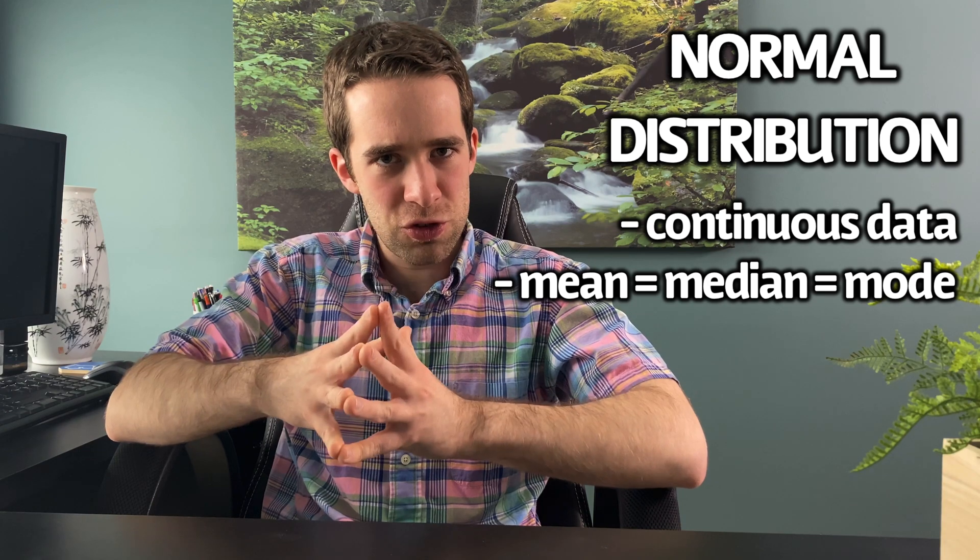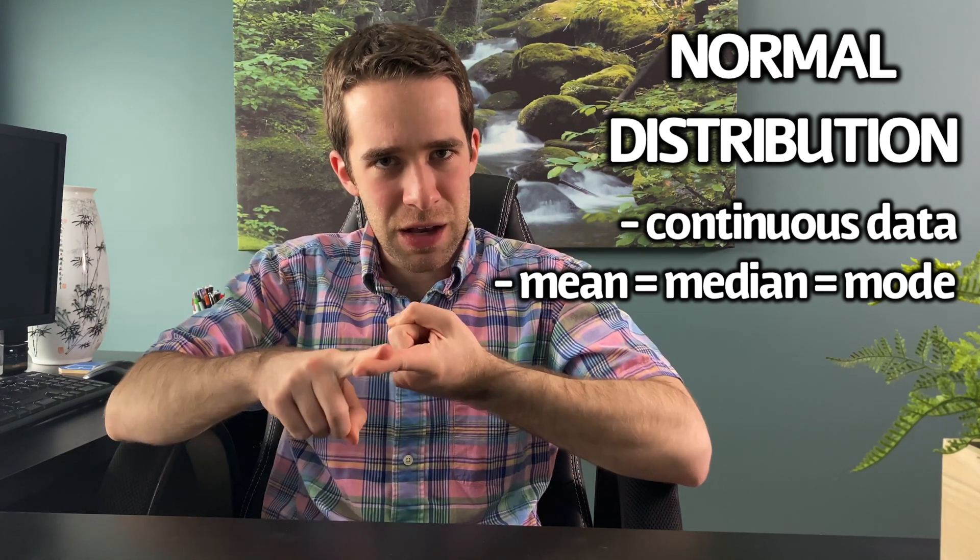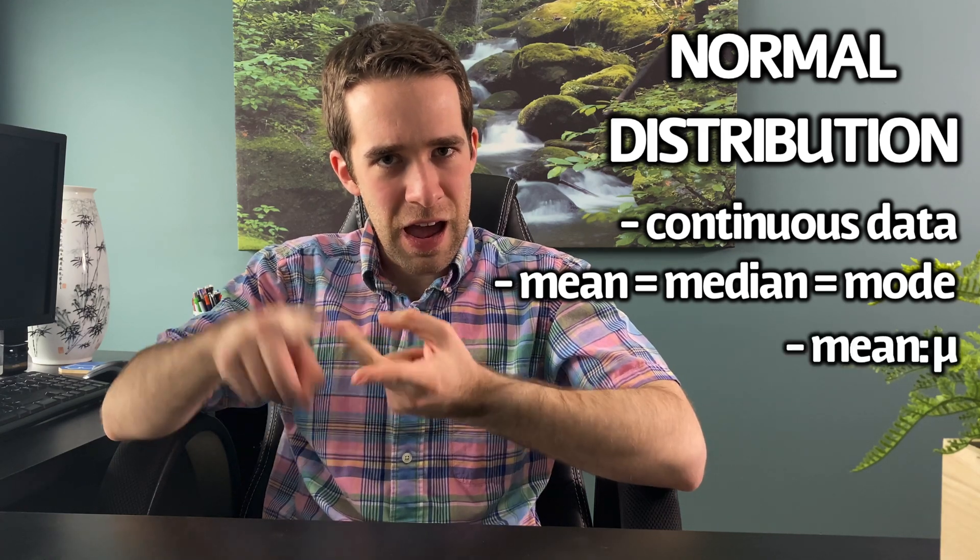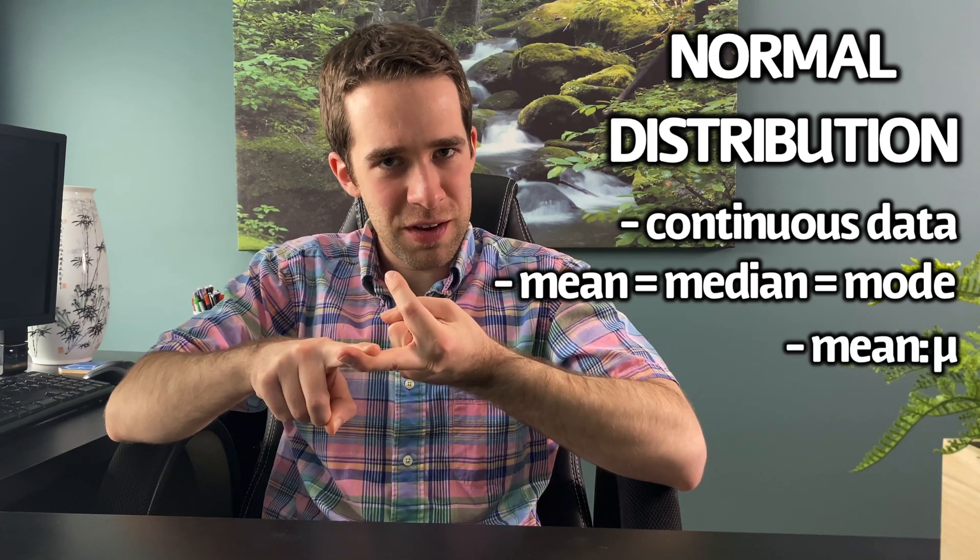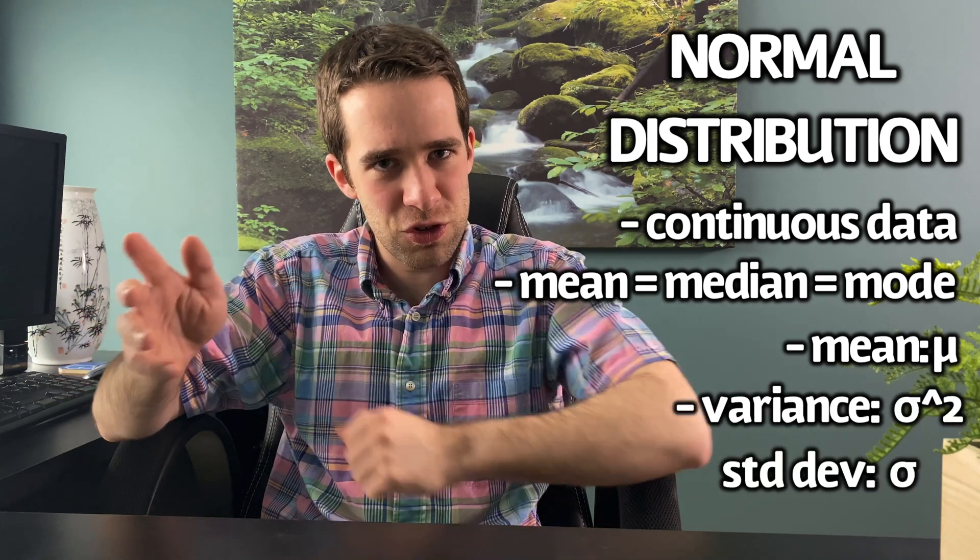Also, the normal distribution is completely defined by two parameters. That's the mean, often denoted by the symbol mu, and the variance, often denoted by sigma squared, or alternatively, the standard deviation, which is denoted by sigma.